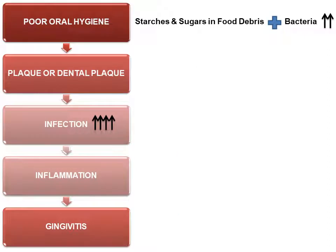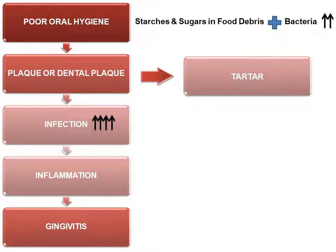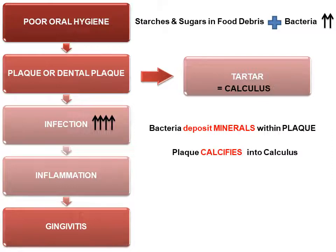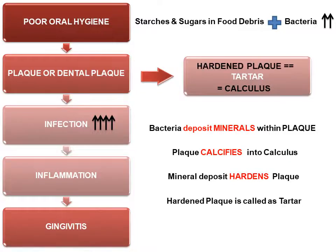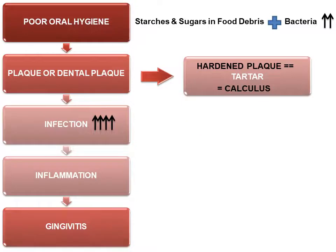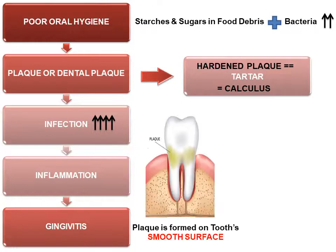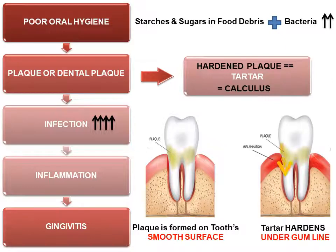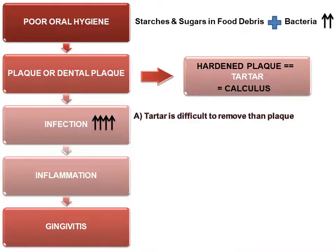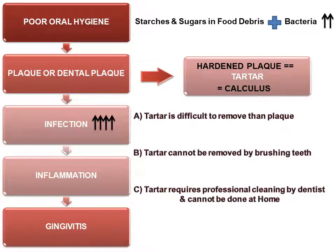Over time, plaque turns into tartar, also known as calculus. If plaque is not removed by brushing, bacteria deposit minerals within the plaque and it calcifies — in simple words, mineral deposit hardens the plaque. Hardened plaque is called tartar. Plaque forms on the tooth's smooth surface, whereas tartar hardens under the gum line. Tartar is more difficult to remove than plaque.